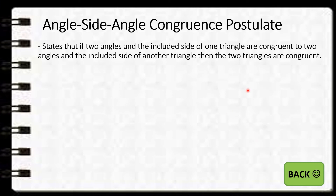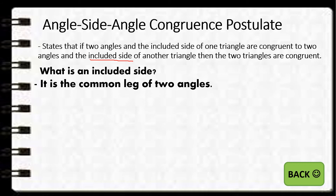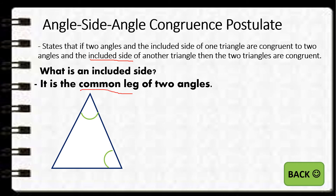So let's have the last postulate: the angle-side-angle, or ASA congruence postulate. It states that if two angles and the included side of one triangle are congruent to two angles and the included side of another triangle, then the two triangles are congruent. Here we emphasize the 'included side' — it is the common leg of the two angles. Unlike the included angle which is between two sides, here the side is between the two angles.